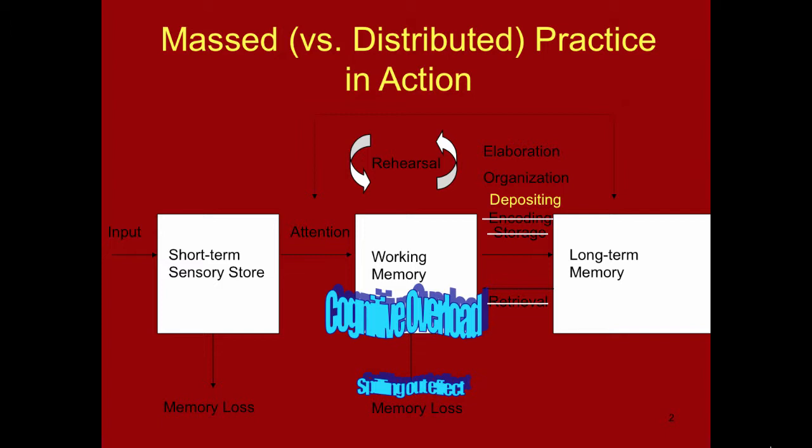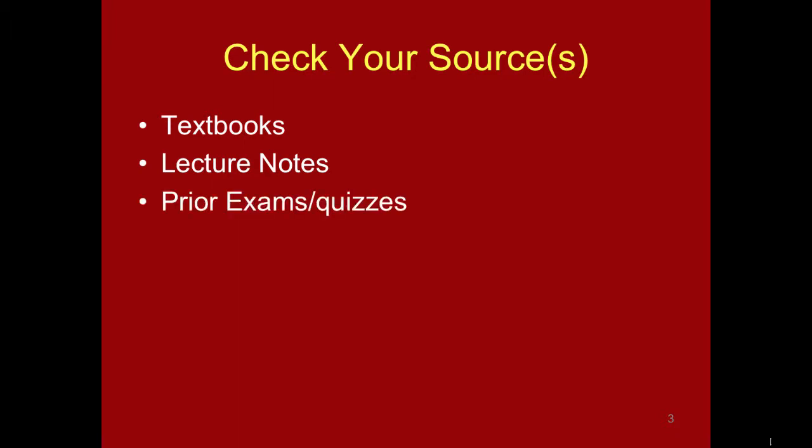Now that we know why it is important to have a distributed study practice, let's take a look at what we should be doing when we're studying. As we are preparing for exams, it is important to utilize several credible sources. Most students will study from textbooks and lecture notes, but it is also important to use prior exams or quizzes. This will help you to become aware of where your strengths and challenges were in the past so that you can plan better for the upcoming exam.